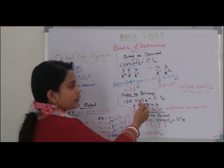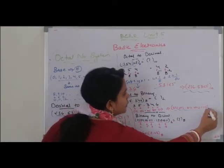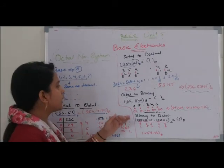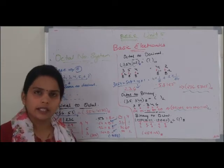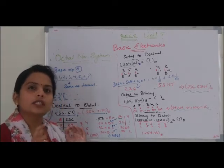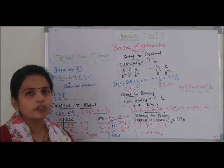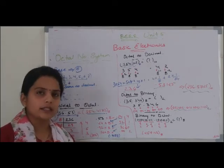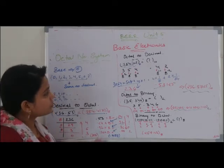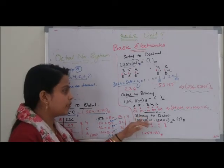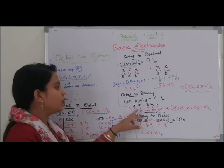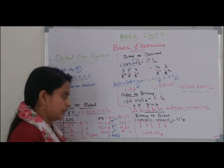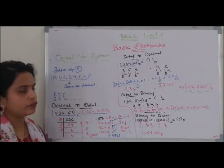We convert individually and then write them together. To recap octal to binary conversion: take each digit of the octal number, convert each digit individually to binary using the double-double method as learned in the previous lecture, keep exactly 3 digits for each converted binary number, and then write all the converted digits together to get the final answer.